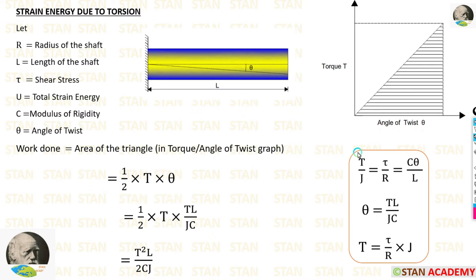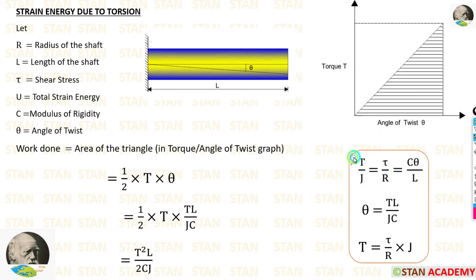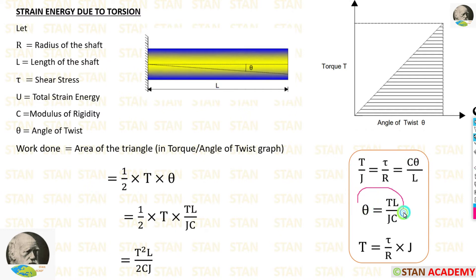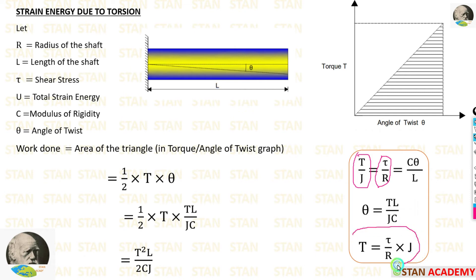We know the torsion equation: T by J is equal to tau by r is equal to c·theta by l. First we are going to relate T by J and c·theta by l. Taking c by l to the left side, we get theta is equal to T·l by J·c. Then relating T by J and tau by r, taking J to the right side, we get T is equal to tau by r into J.